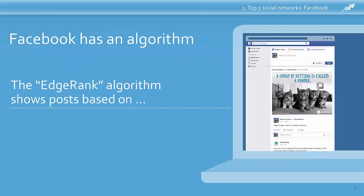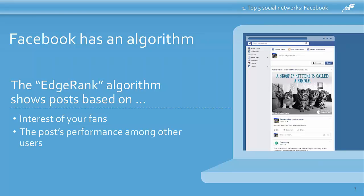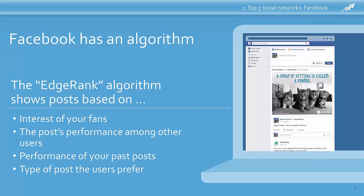Facebook has an algorithm called EdgeRank that determines what each user sees in their newsfeed. EdgeRank figures out what users want to see by looking at what content and pages they're engaging with. It considers your fans' interests — fans who've interacted with your page recently will have a better chance of seeing your content. It also looks at how well your post does with other users, the performance of your past posts, the type of posts your fans prefer, and timeliness — recent posts get priority over older content. The best way to make EdgeRank work for you is to post great, compelling content that your audience will comment on and share.